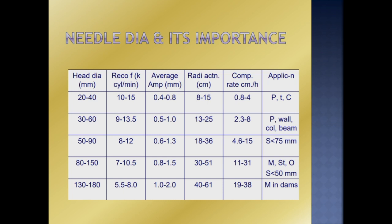Looking at the needle, once you look at the needle there will be parameters to consider. If we have a diameter of 1.8 mm, we can use a slump value less than 70 mm. If we use a slump value of 80 to 150 mm, we can use a needle vibrator.